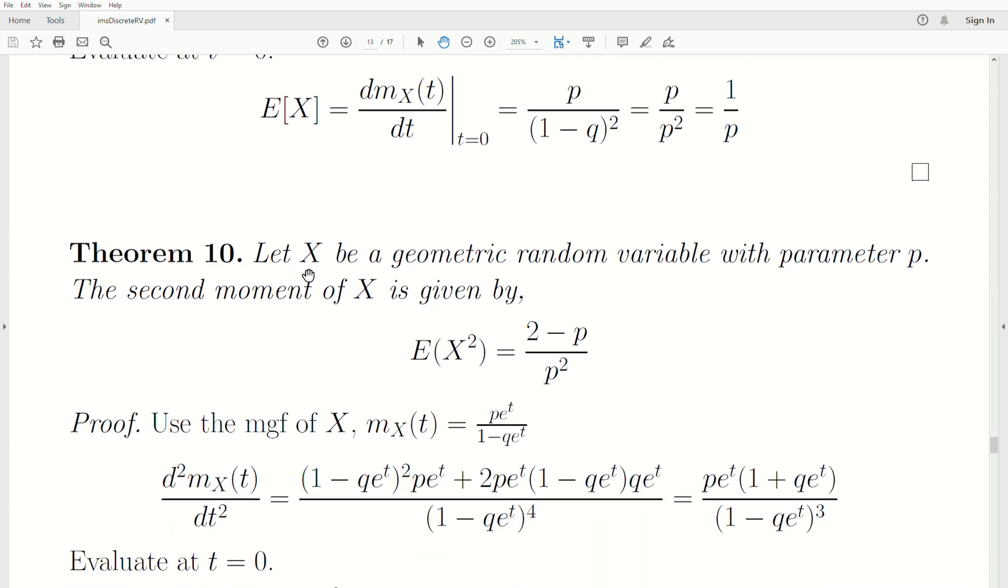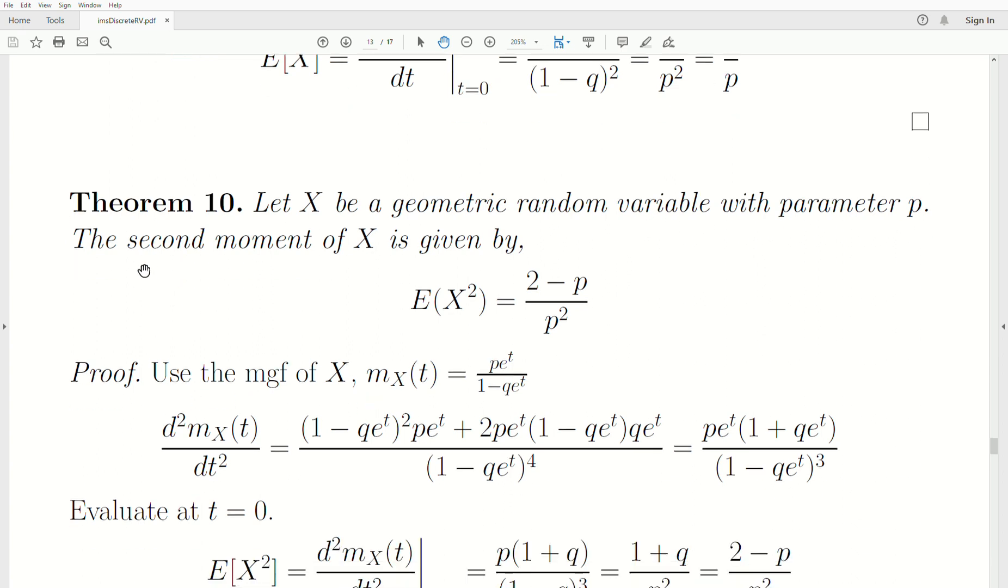Now the second moment. Let's let that be theorem 10. Let X be a geometric random variable with parameter P. The second moment of X is given by this: two minus P over P squared.